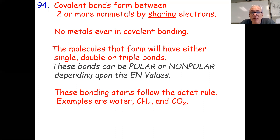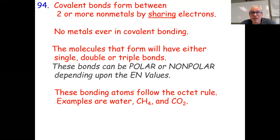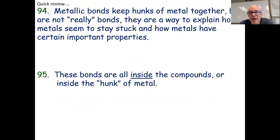Most of these atoms follow the octet rule, and the ions do also. Metals lose enough electrons to be isoelectronic to a noble gas, and the non-metals gain electrons to be isoelectronic to a noble gas. For non-metal covalent bonding, they share enough electrons to get to the magic number eight. There are some exceptions for very small atoms. Metallic bonds keep hunks of metals together — the metals are packed cations surrounded by their loose, mobile valence electrons, which helps explain all the important properties of metals.